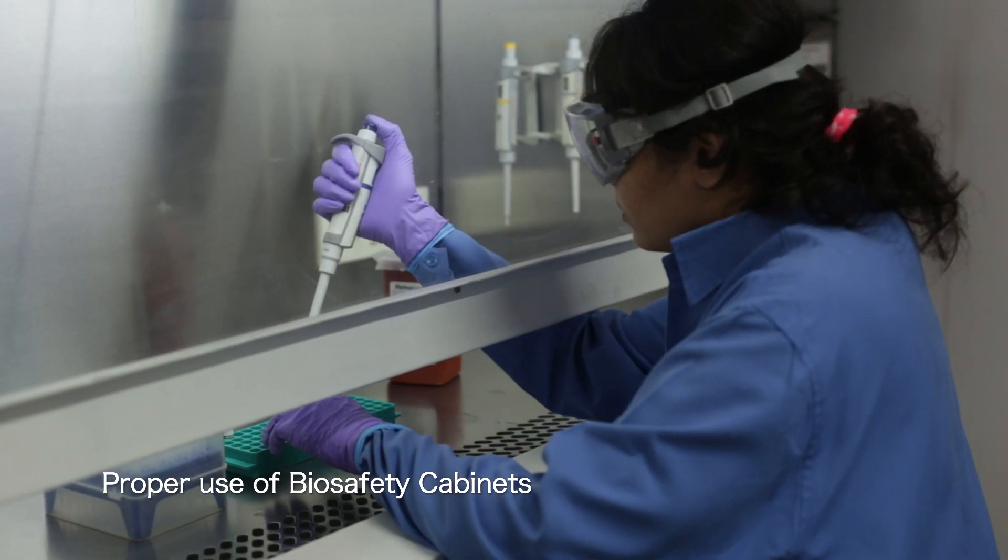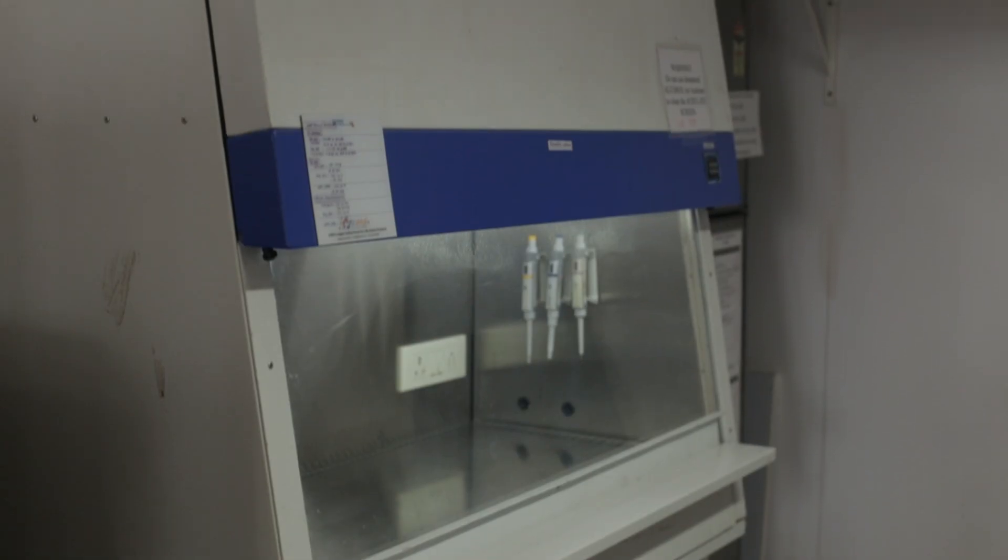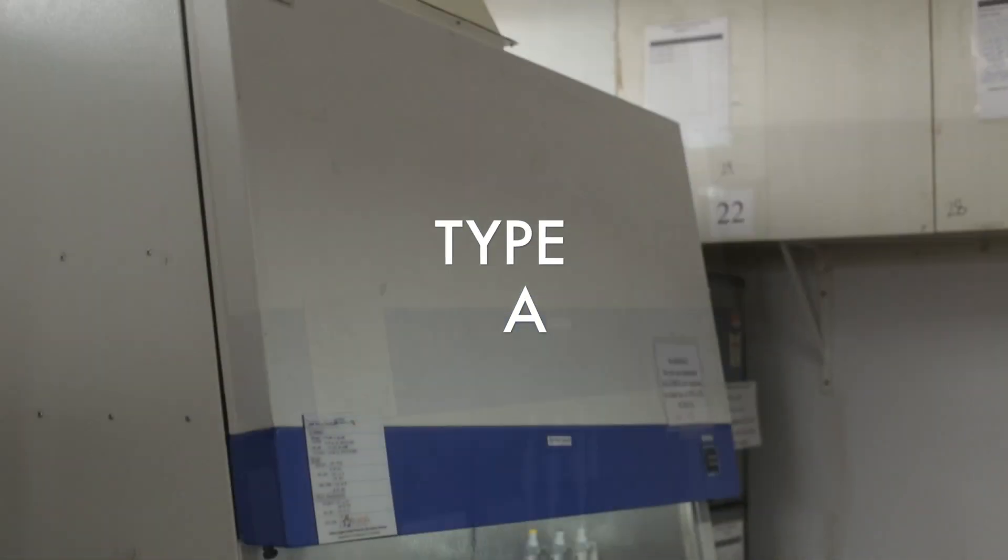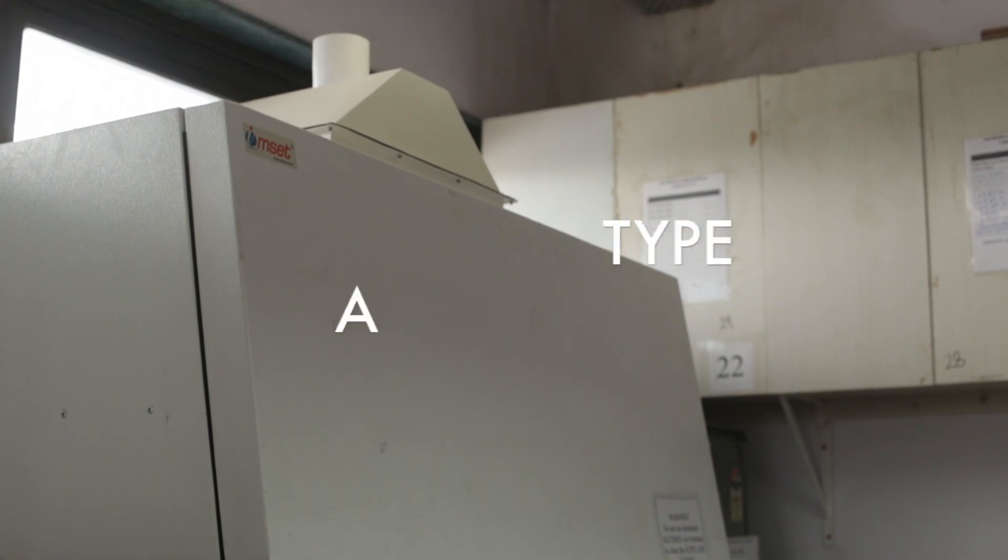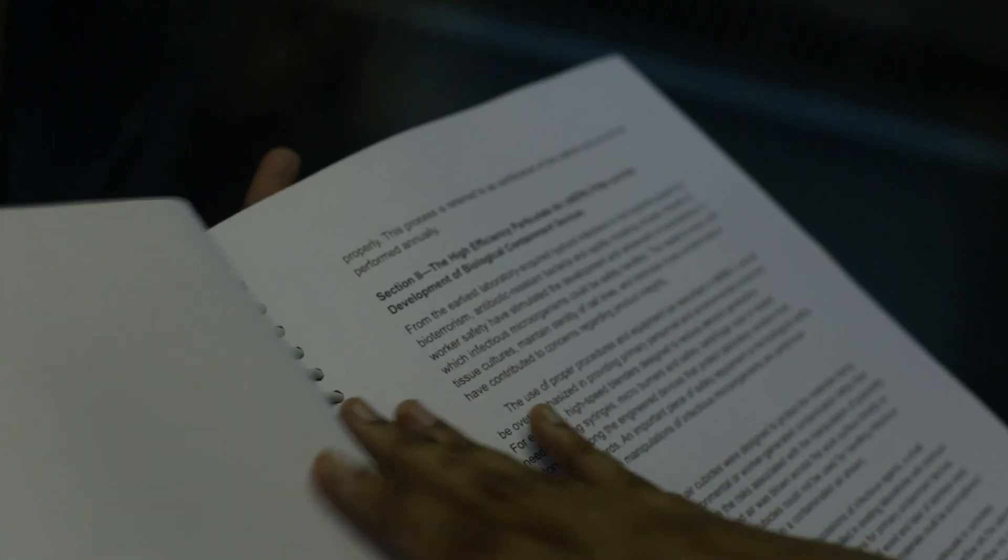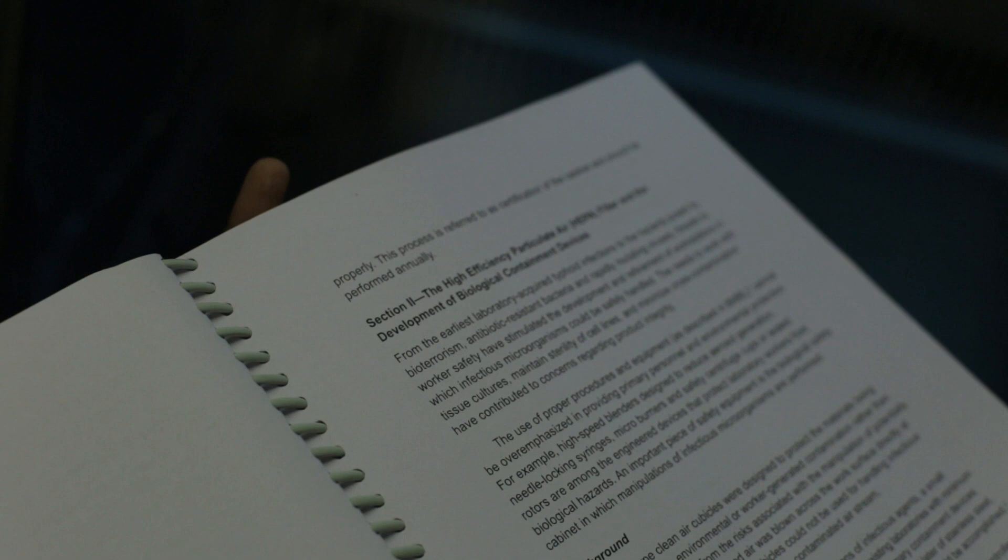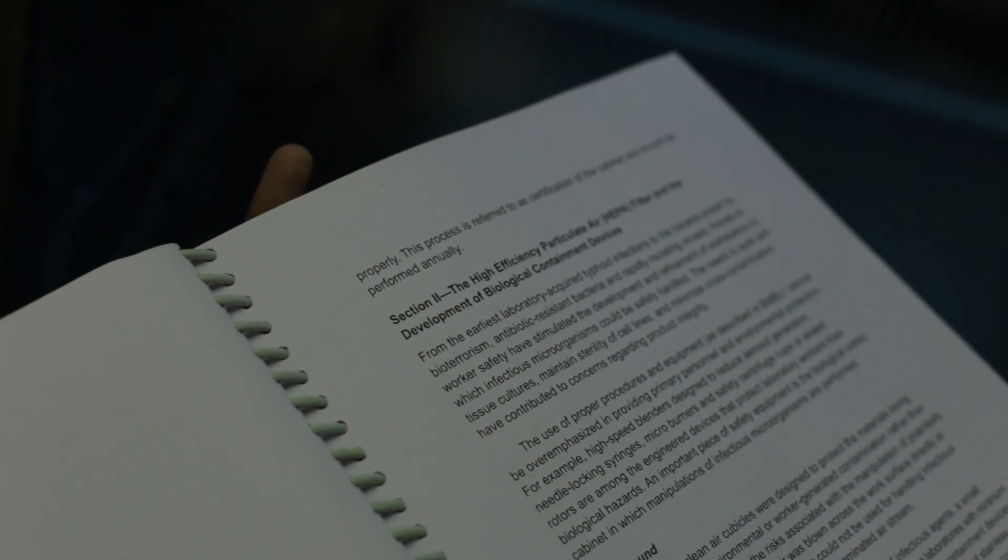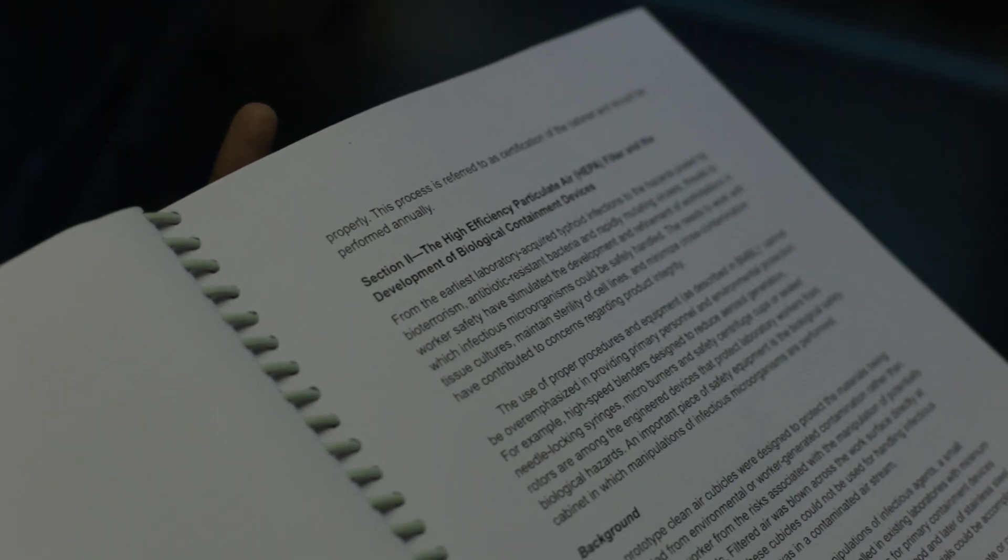Biosafety cabinets offer protection from aerosols and splashes and prevent contamination. The biosafety cabinets which are commonly used are the Type A and Type B. Before working with a biosafety cabinet, make sure that you are familiar with the proper operation and safety precautions by referring to the user manual.